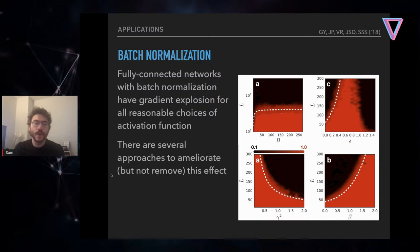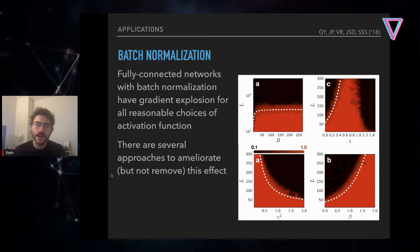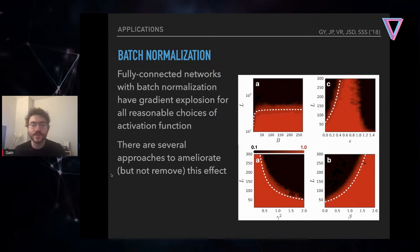For batch normalization, a surprising finding: without residual connections, batch norm actually causes gradients to explode for all reasonable activation functions. You can partially mitigate this by tuning epsilon, beta, or gamma in batch norm, but it doesn't fully remove the effect. So batch norm without residual connections can lead to worse conditioning — the opposite of the commonly assumed benefit.